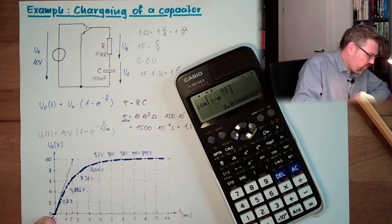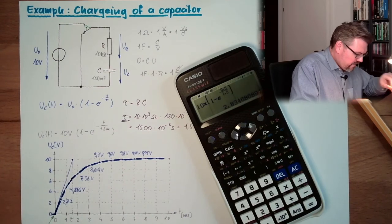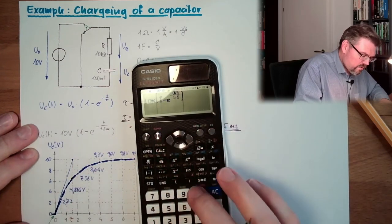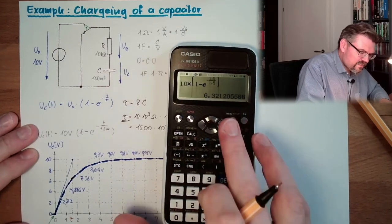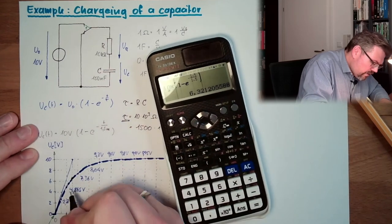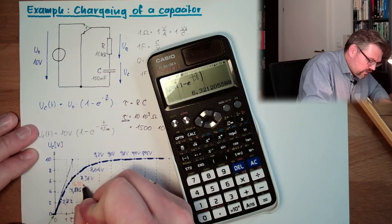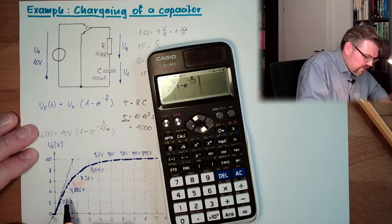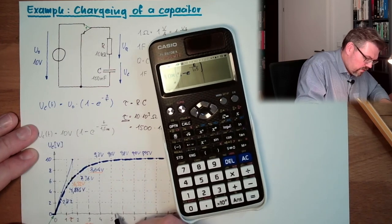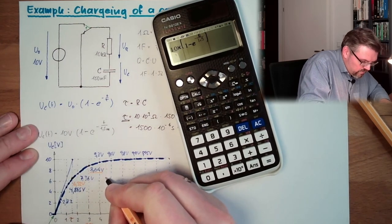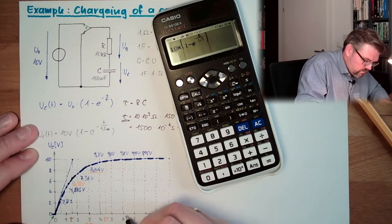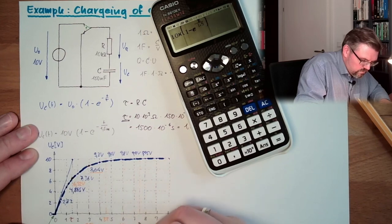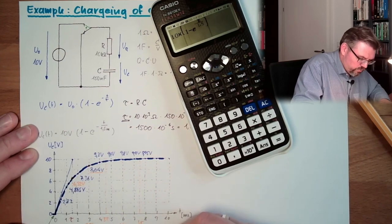Let's calculate what happens at multiples of tau. After 1 tau (1.5 ms), we are at 6.32 volts — that's 63.2%. After 2 tau (3 ms), we are at about 86%. Here is 2 tau, and here is 3 tau, 4 tau, and 5 tau on the time axis.